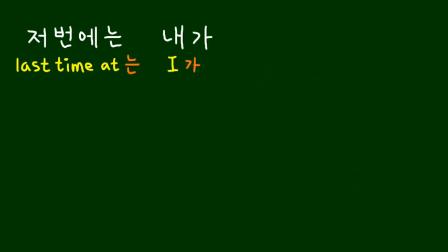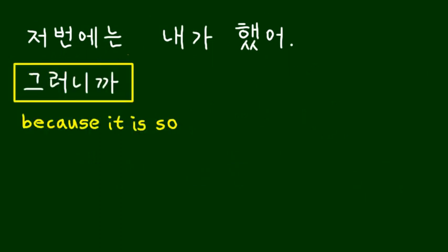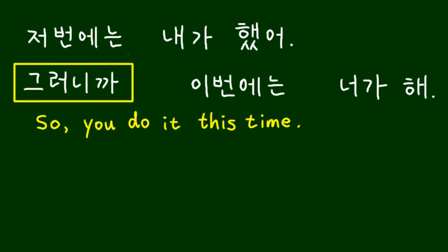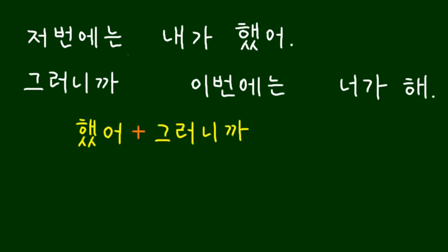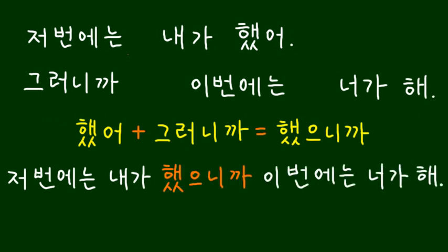저번에는 내가 했어. 이번에는 네가 해. 했어 and 그러니까 → 했으니까. 저번에는 내가 했으니까 이번에는 너가 해.